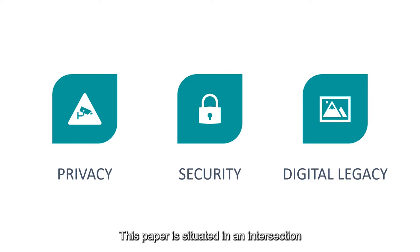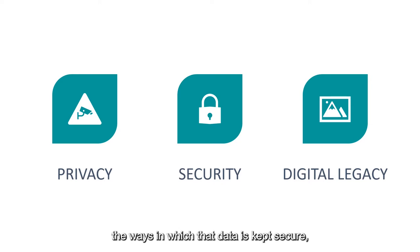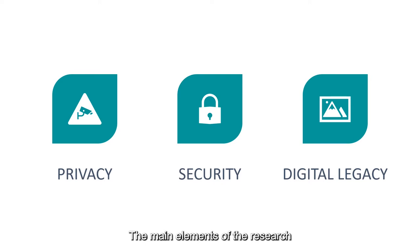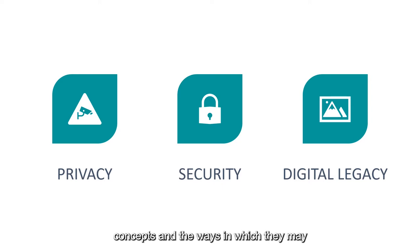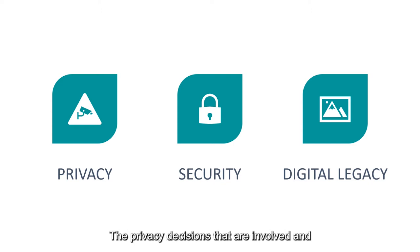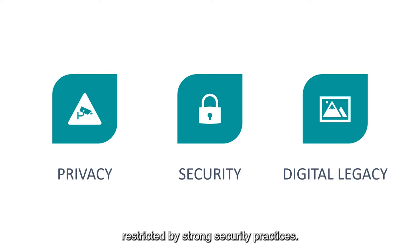This paper is situated at an intersection between the privacy of personal data, the ways in which that data is kept secure, and the concept of digital legacy — the forms of data or digital footprint that remain of an individual after they have died. The research focuses on core individual values and behaviours relating to these three concepts and the ways in which they may interact or conflict. Our paper describes a small-scale qualitative study considering digital legacy planning on a granular level, the privacy decisions involved, and the ways in which it may restrict and be restricted by strong security practices.